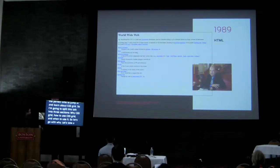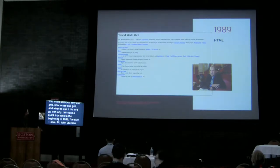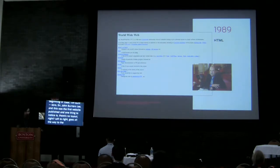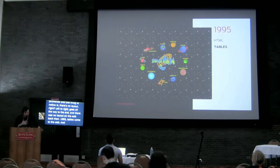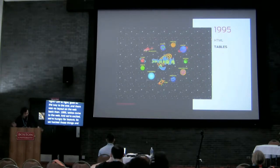Let's take a quick trip back to the beginning. In 1989, Sir Timothy John Berners-Lee invents the web. This is the first website, published in 1991. One thing to notice is that there's no layout — it just goes left to right, all the way to the end, then jumps to the next line. There was no layout on the web back then. In 1995, tables come to the web, and we were excited — hungry for layout. So we hacked those things and sliced images like there was no tomorrow, doing all these cool things with HTML.